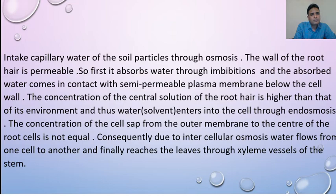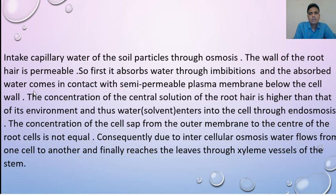Plants intake capillary water of the soil particles through osmosis. The wall of the root hair is permeable, so first it absorbs water through imbibition. The absorbed water comes in contact with the semipermeable plasma membrane below the cell wall. The concentration of the central solution of root hair is higher than that of its environment, and thus water enters into the cell through endosmosis. Due to intercellular osmosis, water flows from one cell to another and finally reaches the leaves through xylem vessels of the stem.